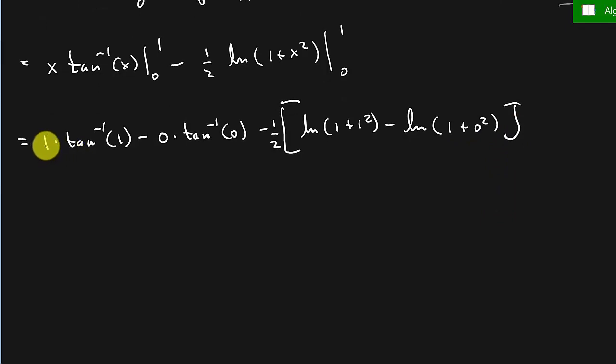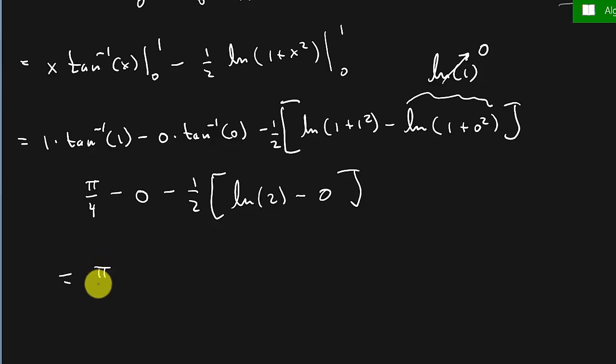All right? So this right here, that's 1, this is pi over 4, so 1 times pi over 4 is pi over 4 minus 0, minus 1 half times, and this is going to be natural log 2 minus, now what is this right here? This is natural log of 1, which we know that's 0. And so our answer is pi over 4 minus 1 half natural log 2.